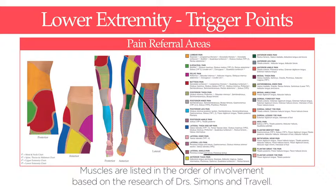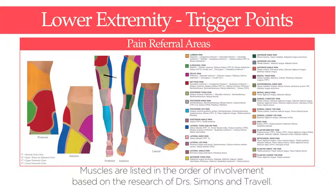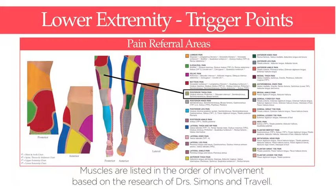Muscles are listed in the order of involvement based on the research of Dr. Simons and Travell, shown to have trigger points that commonly produce referred phenomena such as pain, tingling, burning, numbness, etc. into the area.